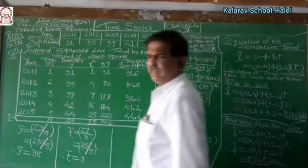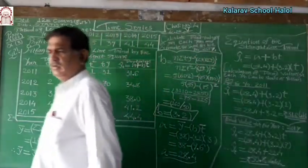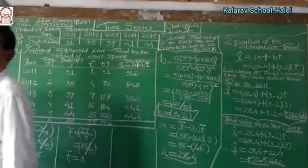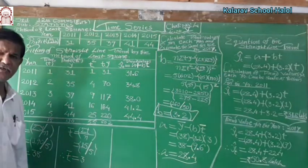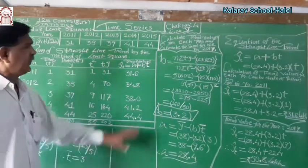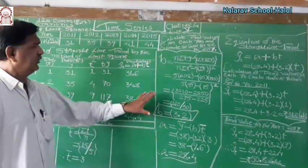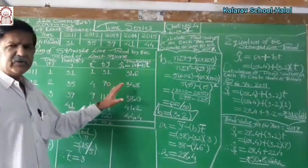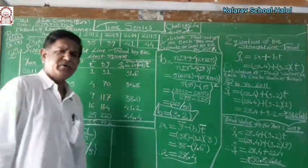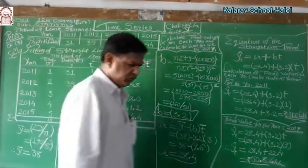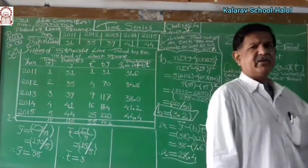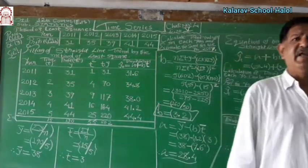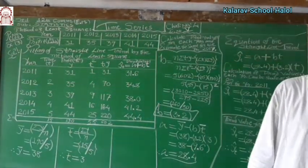Hello everyone. Analysis of time series, chapter number 4 in statistics. This is one of the important methods, which is known as the method of least squares.